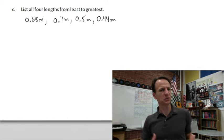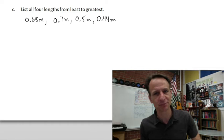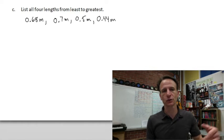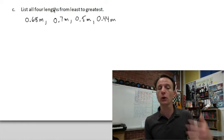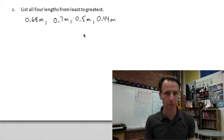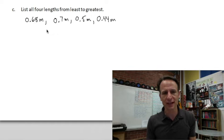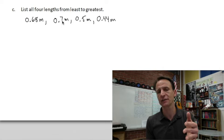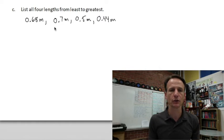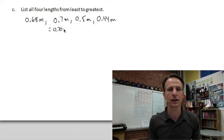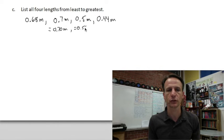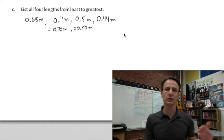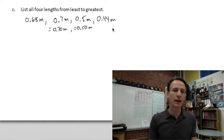Now we're going to list all four lengths from least to greatest. I've copied them all down so we have them before us. Let's remind ourselves that the ones expressed as tenths — seven tenths and five tenths — we can rewrite those as hundredths: seven tenths equals 70 hundredths, and five tenths equals 50 hundredths.